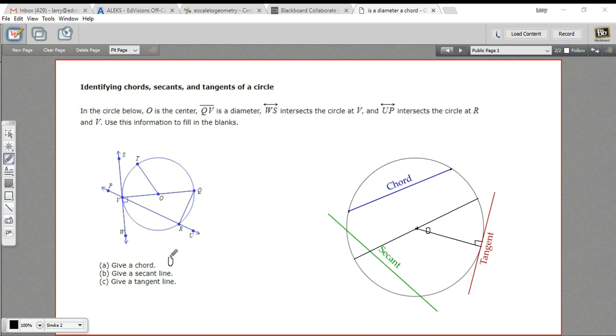I'm just going to put down segment QR. And then it says give a secant line. Remember, the secant passes through, touches, or intersects the circle in a couple of points and continues on through. So this line, P, U, would be a secant line.